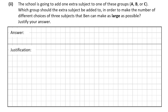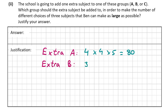Now let's look at B part 2. The school is going to add one extra subject to one of the groups — which group should it be added to in order to make the number of different choices as large as possible? If added to group A: A has four, B has four, C has five — four by four by five is 80. If added to group B: A stays three, B increases to five, C stays five — three by five by five is 75.